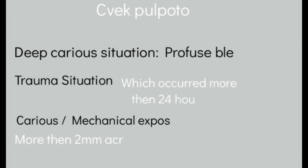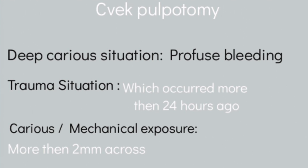The next procedure is CVEK pulpotomy, also known as partial or shallow pulpotomy. It involves removal of a small portion of coronal diseased pulp. This is used when removing deep caries has allowed bacteria and toxins to infiltrate the pulp, causing inflammation — indicated by profuse bleeding at the pulp exposure — and the situation is beyond a pinpoint exposure that can be controlled with direct pulp capping.